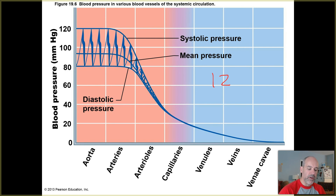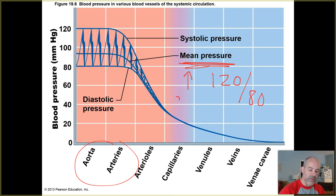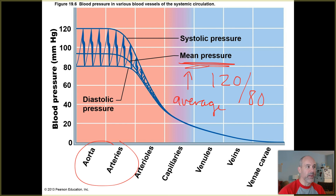Both of those are definitions you should know. A typical average blood pressure reading is 120 over 80 — 120 is the systolic pressure and 80 is the diastolic pressure. Those pressure readings occur in larger arteries fairly close to the heart. In between the two, you have the mean pressure, which is your average pressure — the max is your systolic, the minimum is your diastolic, and then in between is your mean, or what the average pressure is within a blood vessel at any given time.